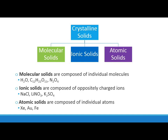Crystalline solids can be subdivided into molecular, ionic, or atomic solids. Molecular solids are made of molecules — only nonmetals, like water or sucrose (C₁₂H₂₂O₁₁). Ionic solids are made of ions — a metal and at least one nonmetal, like sodium chloride, lithium nitrate, or potassium sulfate. Atomic solids are made of just individual atoms not bonded to any other elements — like xenon, gold, or iron.